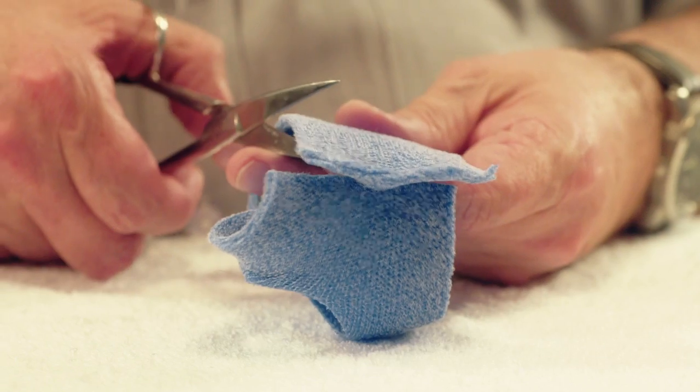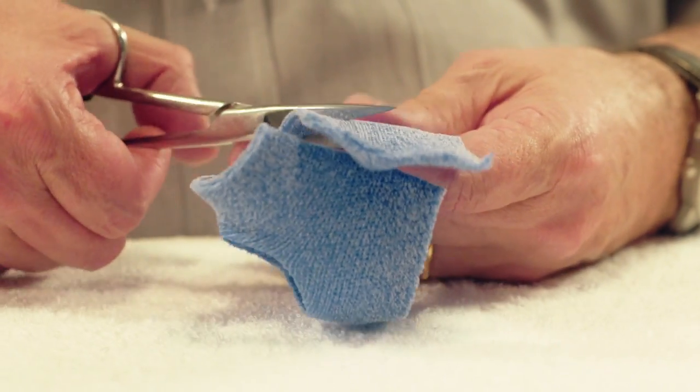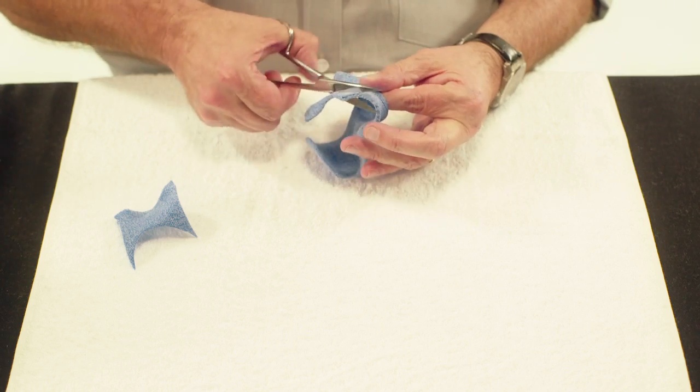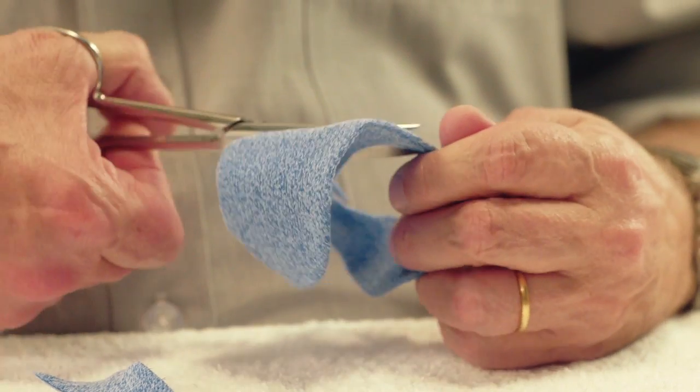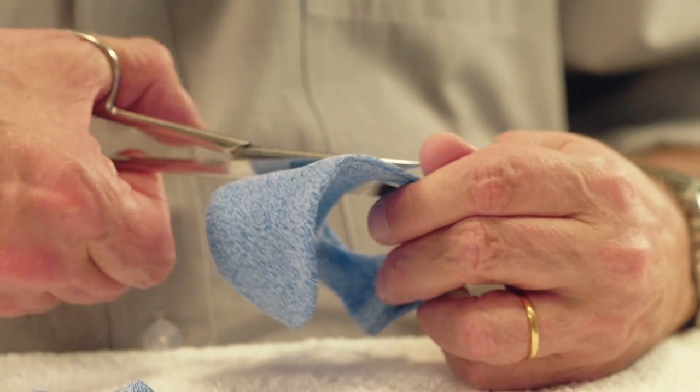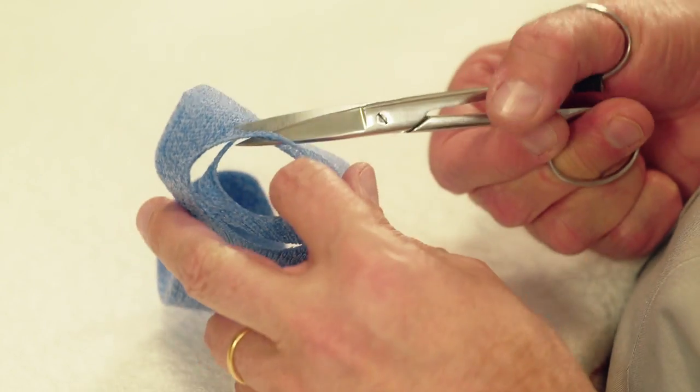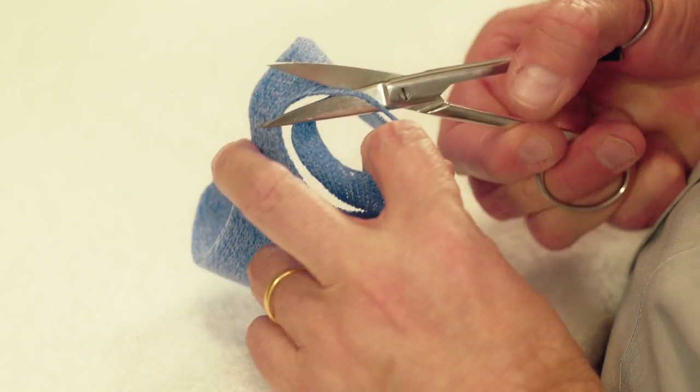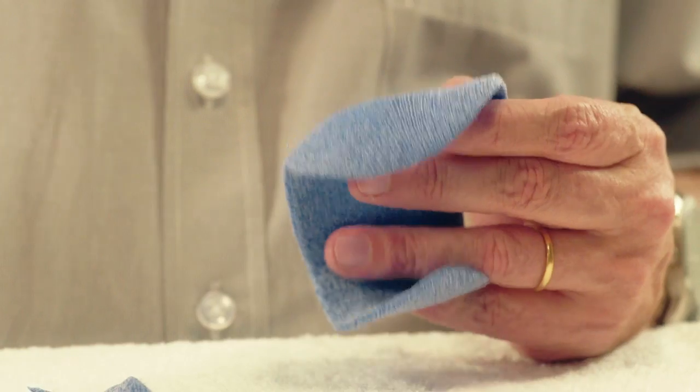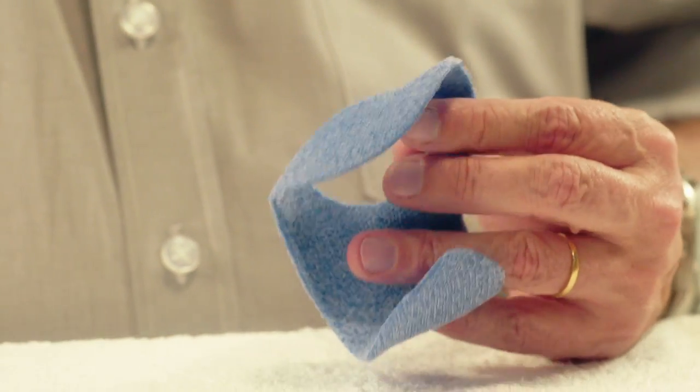On both sides of the dorsal side of the orthosis, remove excess material around the thumb, thus permitting the opposition of the thumb and freeing the thenar eminence as much as possible. Be sure to preserve sufficient material in order to exert pressure on the base of the thumb's metacarpal.